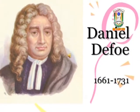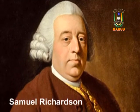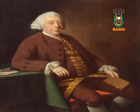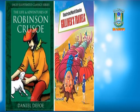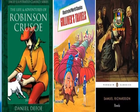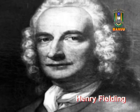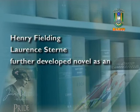Daniel Defoe, Jonathan Swift, and Samuel Richardson are some of the initial novelists. Their works — Robinson Crusoe, Gulliver's Travels, and Pamela — are considered pioneering works in literature. Henry Fielding and Laurence Sterne further developed the novel as an independent form. Henry Fielding's novels have a picaresque quality with their episodic plots.